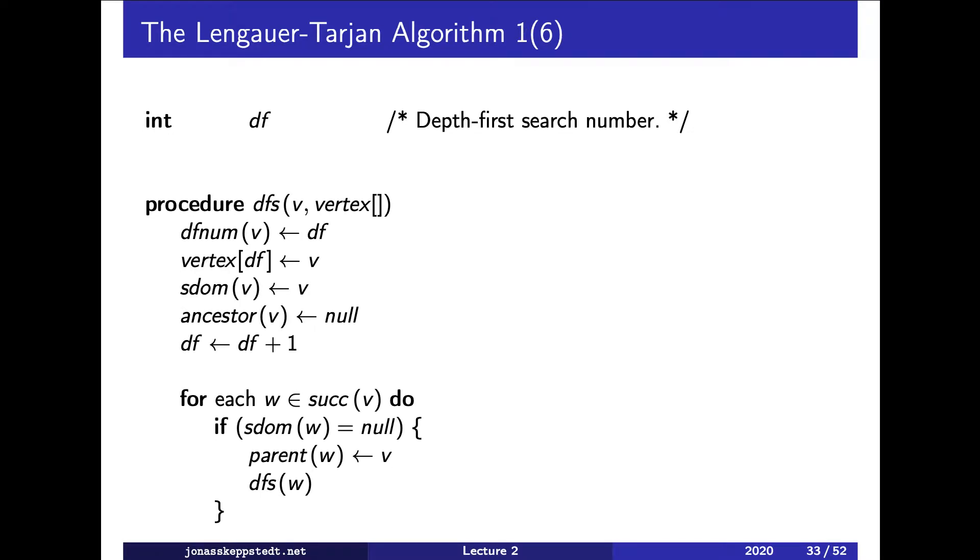We set the depth-first search number and put the vertex v into this vertex array at the position of the depth-first search number so that we can process them in decreasing order of depth-first search number.